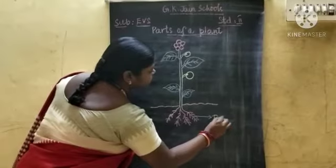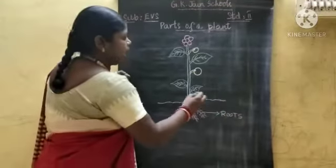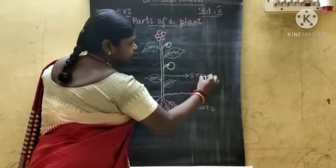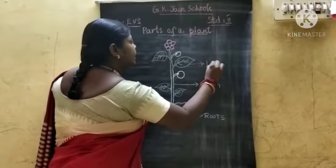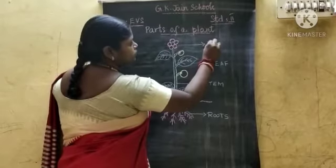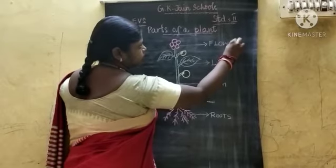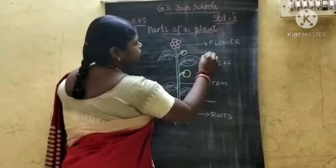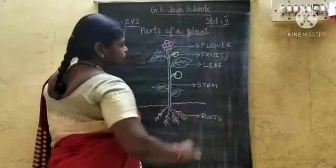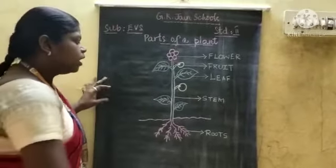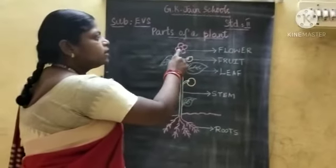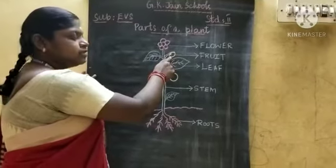This is the root. And this is the stem. Roots, this is a stem, this is a leaf, and this one is a flower, this is a fruit. Some plants give vegetables and fruits.